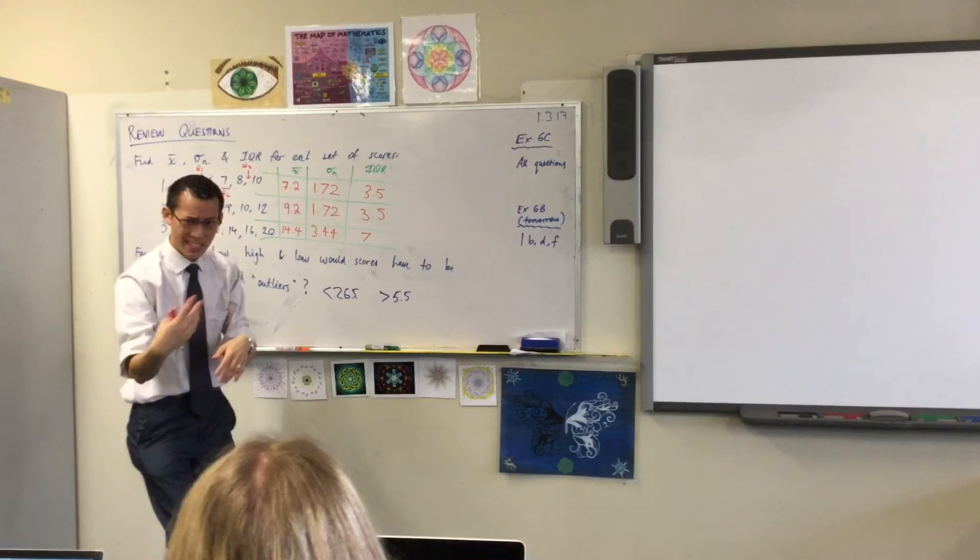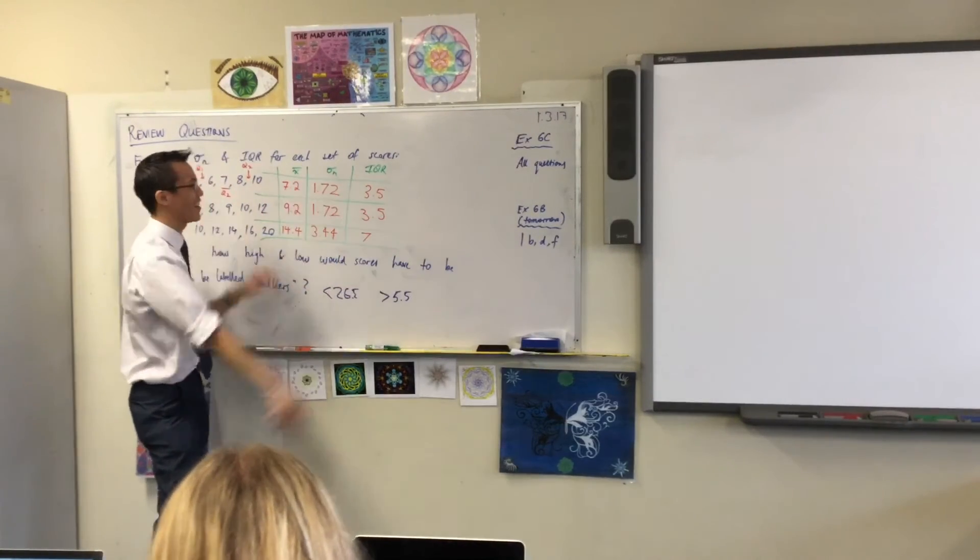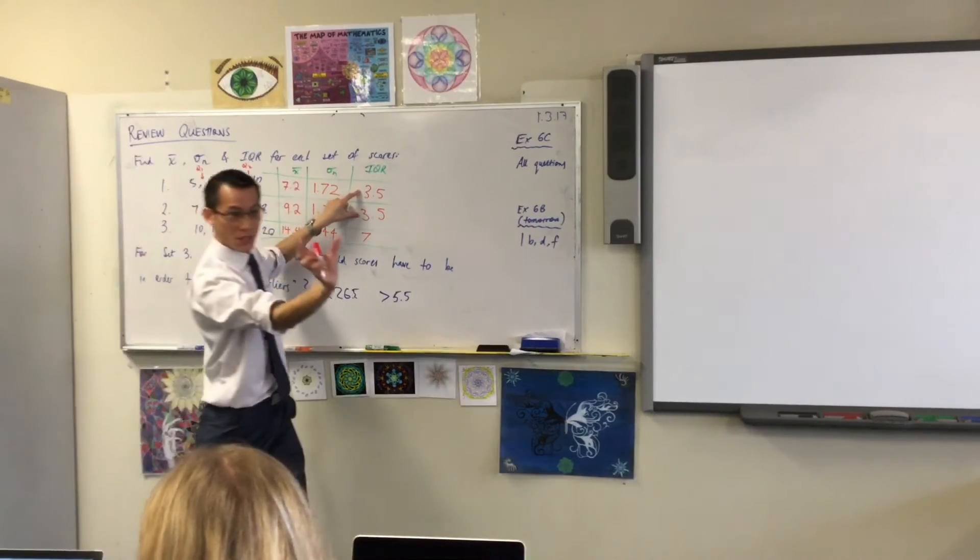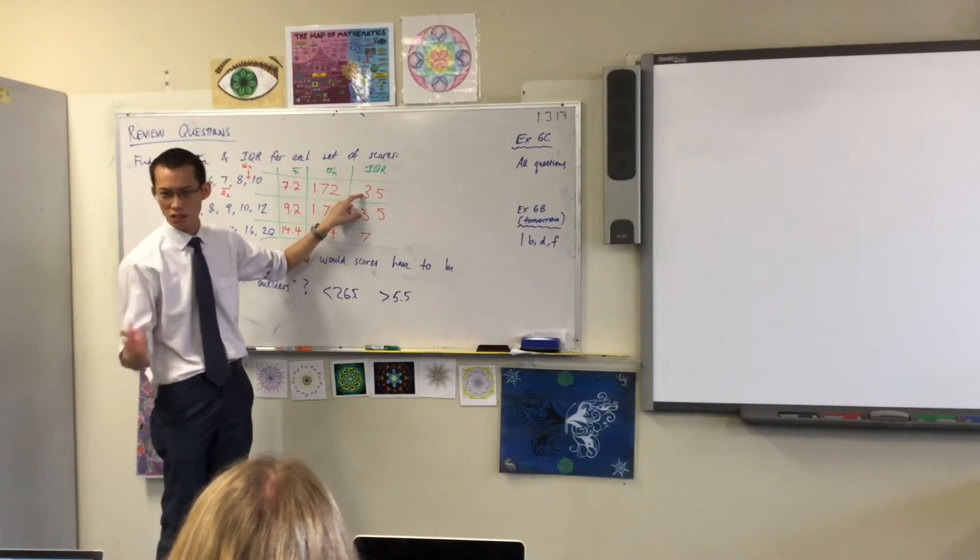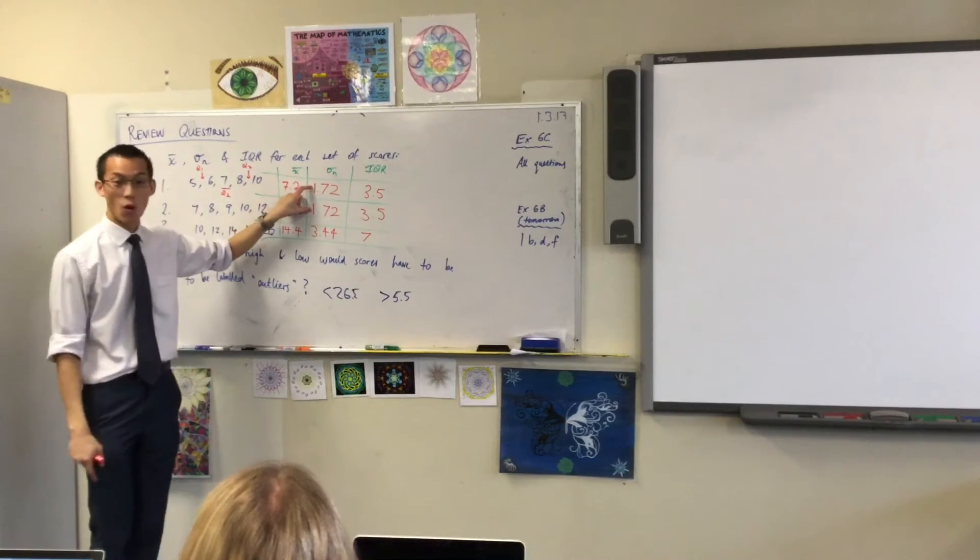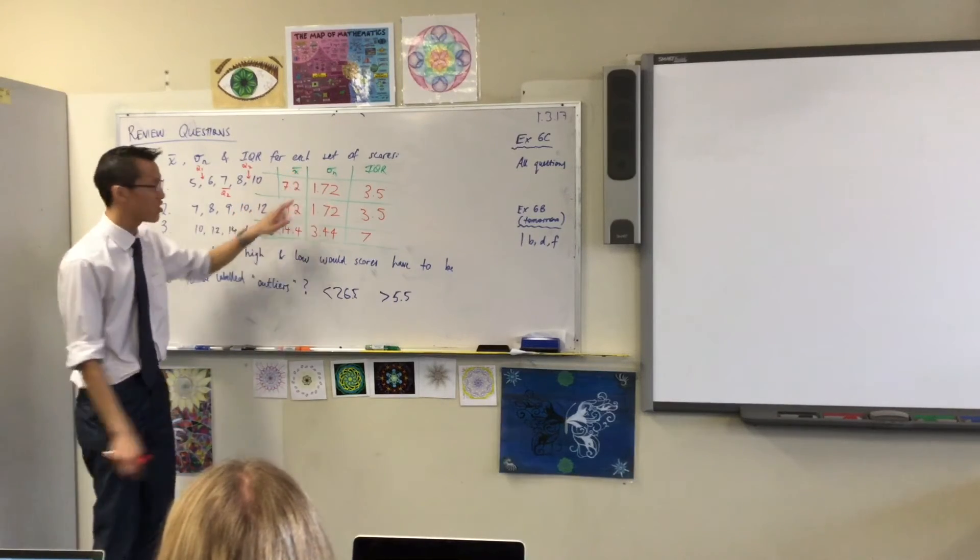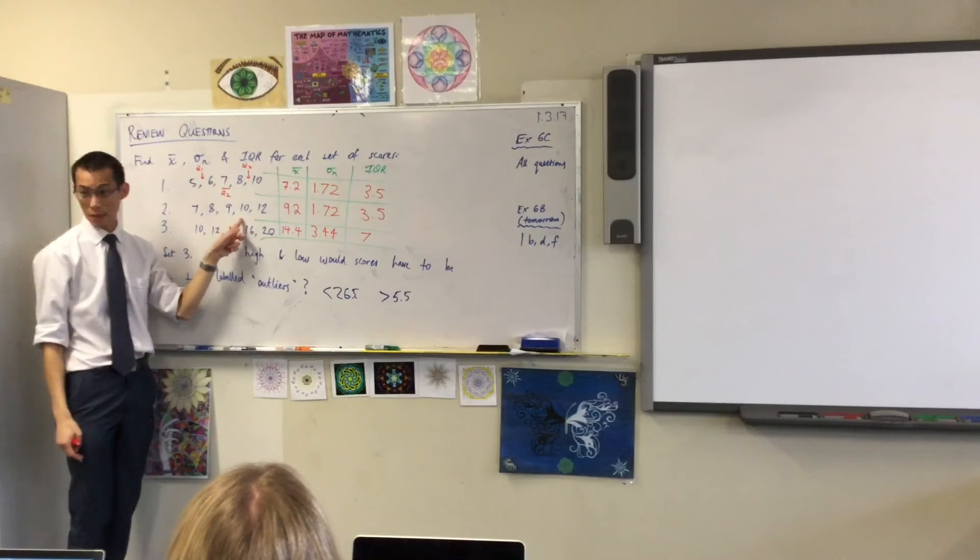Yeah, measures of distance. The fancy word we usually use is spread—so how far apart are they spread out? Now, because you moved everyone up by two, they're still spread out the same amount. Does that make sense? They're just all higher, and that's why these are also the same. Do you see why the standard deviation hasn't changed? These guys are no further apart than these guys, even though these numbers are bigger.